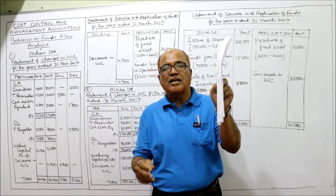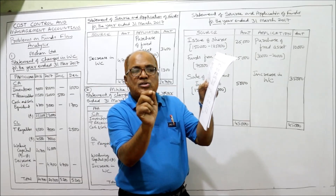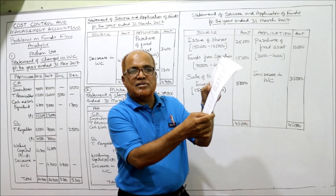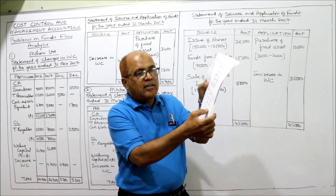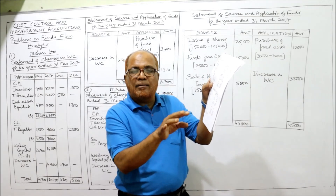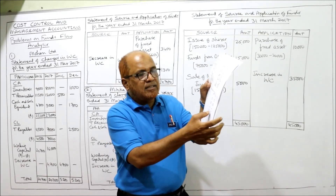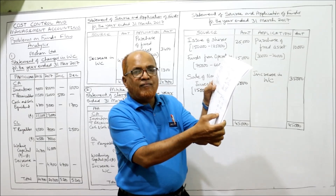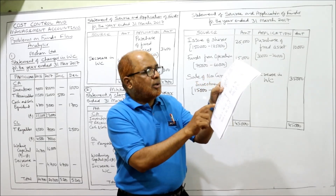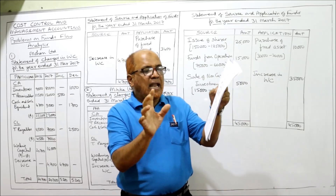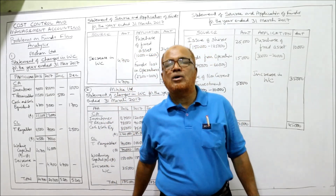In your material it is given as 5,000 — please correct it. There is a typing mistake; instead of 10,000 it was taken as 5,000. Make it 10,000, then only the balance sheet will tally. So fixed assets: last year 6,600, current year 10,000.